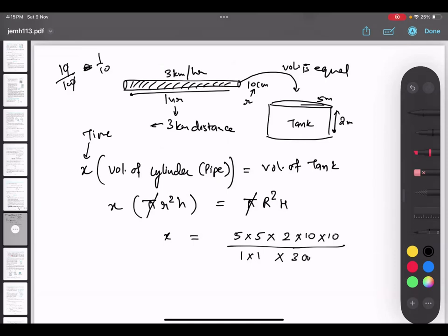And this is in hour. So let me just cancel these three zeros. These two zeros cancel, and this 10 can cancel. So I have 5 upon 3 hour.